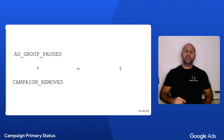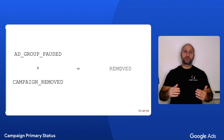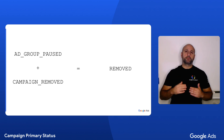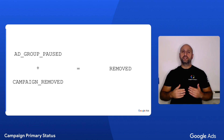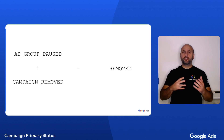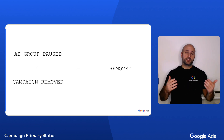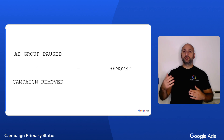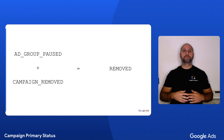The answer is that the primary status will be removed, because it's a permanent state and thus it takes precedence over not_eligible, which is a temporary problem that can be fixed — in this case, for instance, by unpausing the ad groups of this campaign.